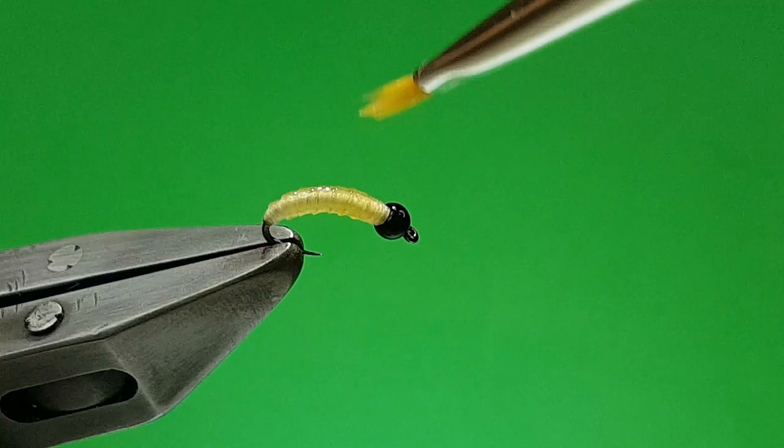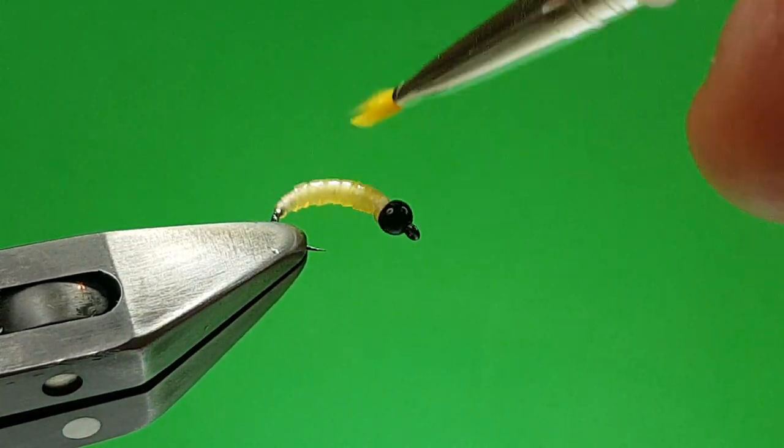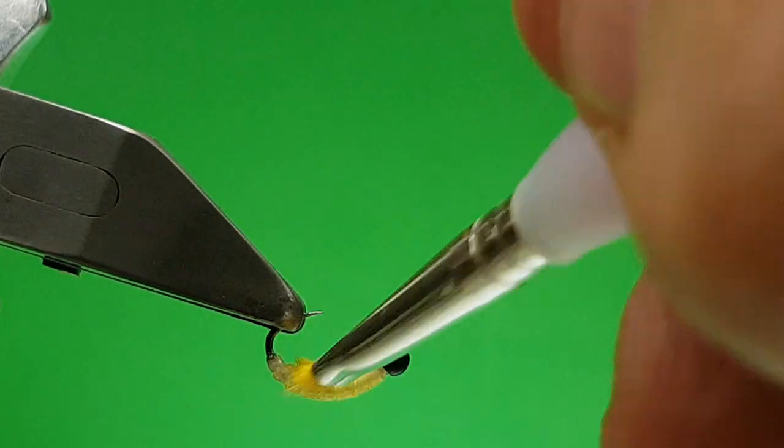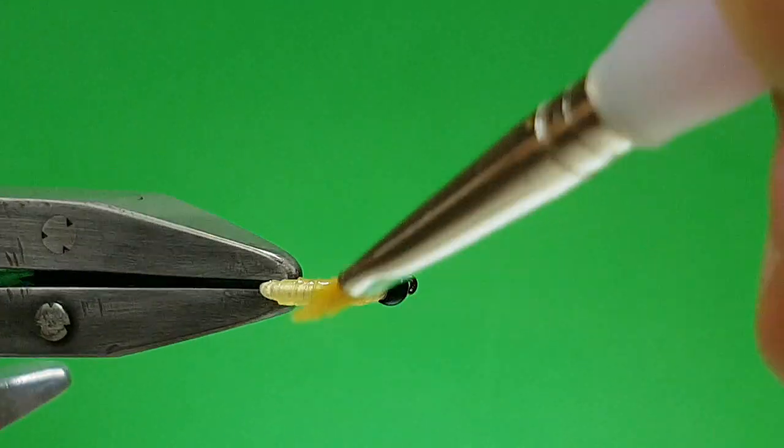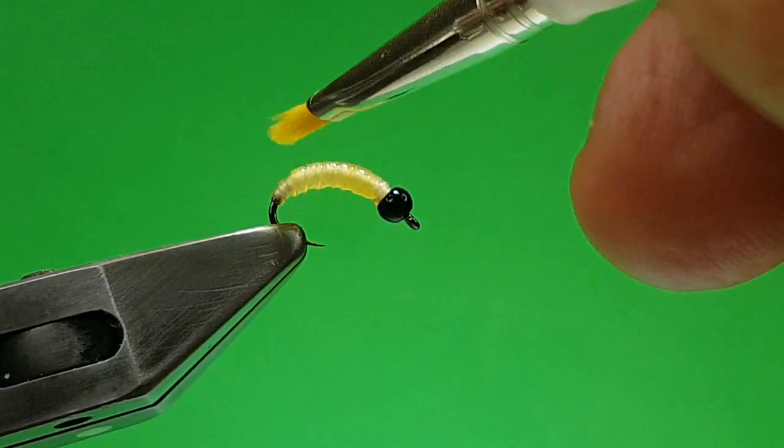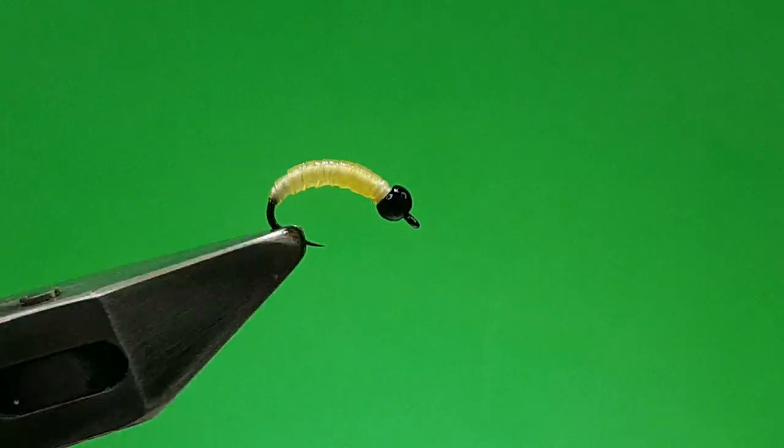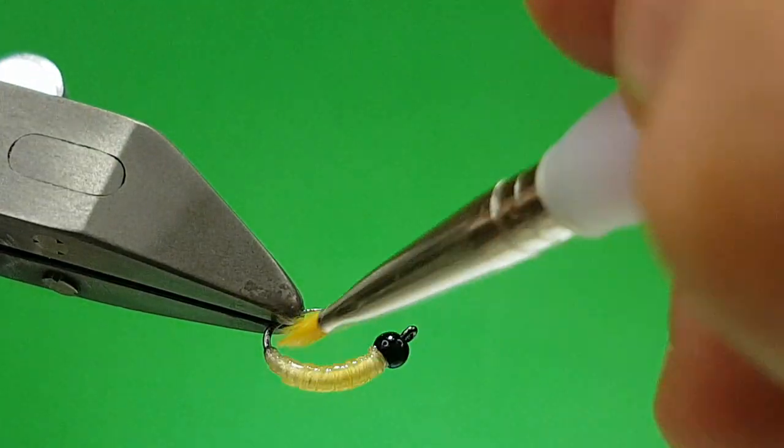This is not only a good Grayling fly, but it's also a great trout fly, so, obviously, the trout teeth are a bit rougher than the Grayling. So, just a nice, fine coat, as I say, it's really just to soak it in, you can see the shine, and it starts to soak in.